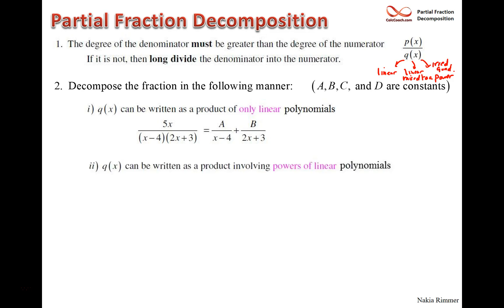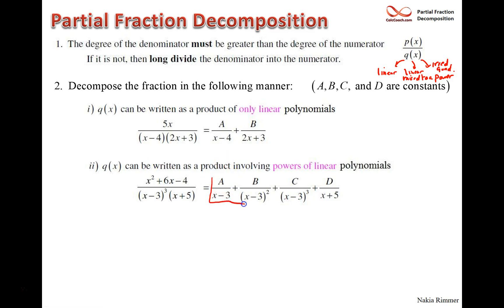Case 2 — a linear factor raised to a power, e.g., (x - 3)³ in the denominator. This is handled differently: you need one fraction for each power from 1 up to the full power. So for a cubic you need fractions with (x-3)¹, (x-3)², and (x-3)³ in the denominators, each with a constant numerator. Any other distinct linear factor, like (x + 5), follows Case 1 with its own fraction.